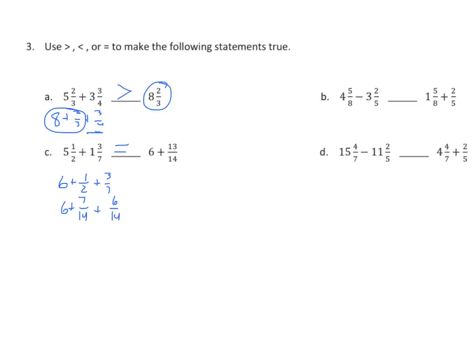Going on to B: I know that 4 minus 3 is 1, so I have 1 and 5 eighths minus 2 fifths on the left, and 1 and 5 eighths plus 2 fifths on the right. This right side must be larger because on the left side I'm subtracting from 1 and 5 eighths, while on the right side I'm adding to 1 and 5 eighths.